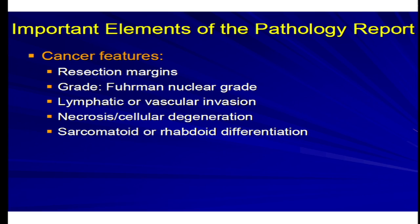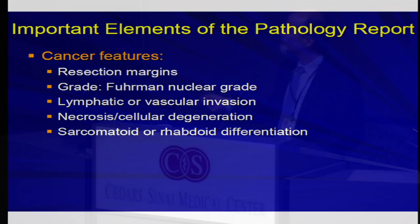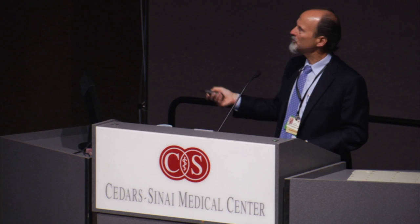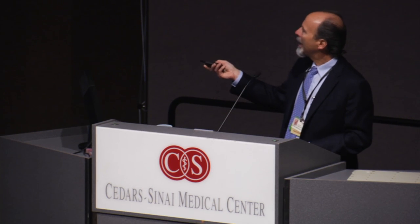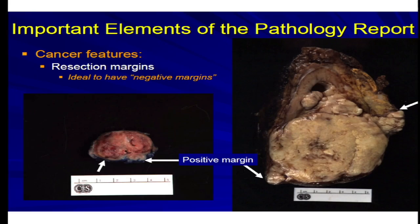The final cancer features I'll discuss are resection margin, grade, vascular invasion, the presence of necrosis, and sarcomatoid or rhabdoid differentiation. These are elements which go beyond cancer staging and the diagnosis.